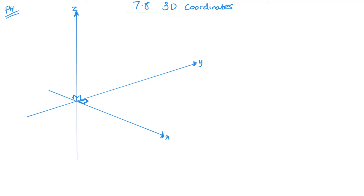I can pick a point on this coordinate — let's call it point P — and it's going to have coordinates X, Y, and Z. If I think about the distance that this point makes with the origin, I'm thinking about this straight line, and it's going to hit some sort of coordinate within the X and Y axes.